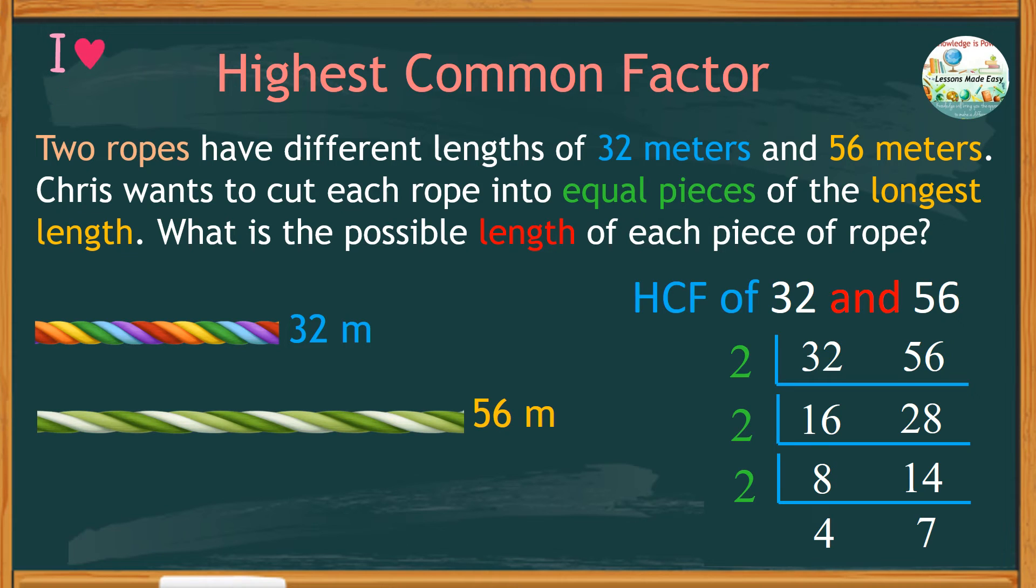We can now stop dividing from this point since 4 and 7 do not have a common divisor. All we need is to take the product of common factors which are 2, 2, and 2. So, 2 times 2 times 2 is 8. Thus, the highest common factor of 32 and 56 is 8.